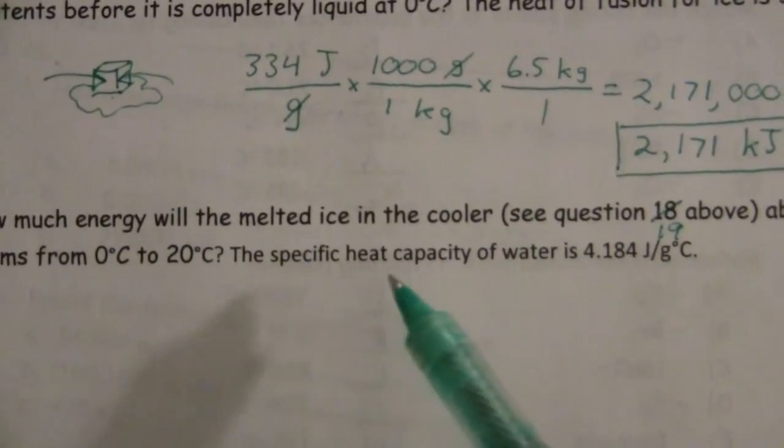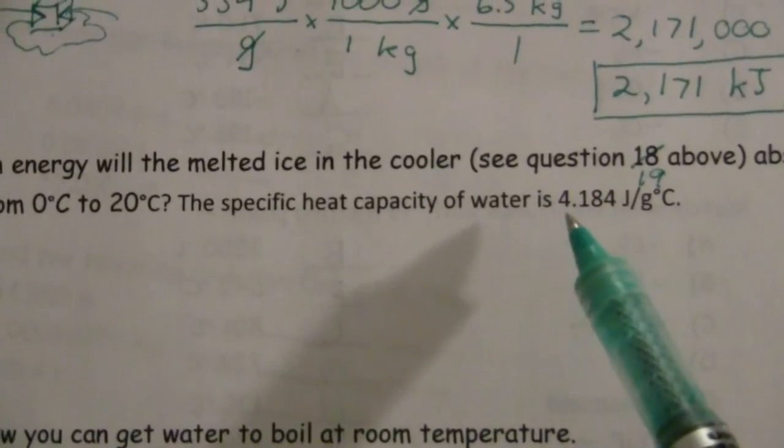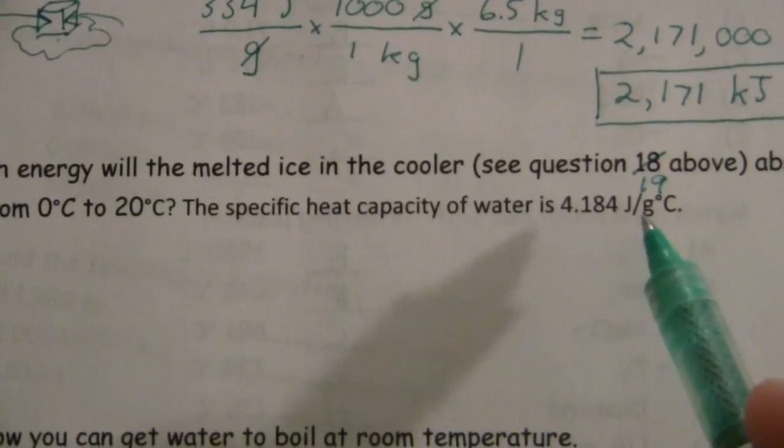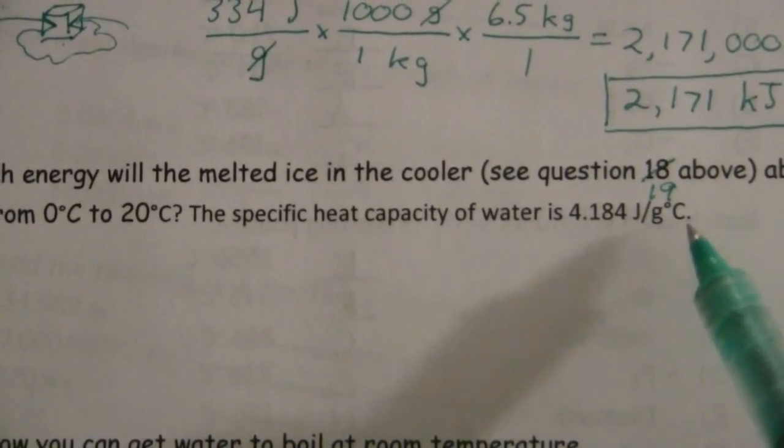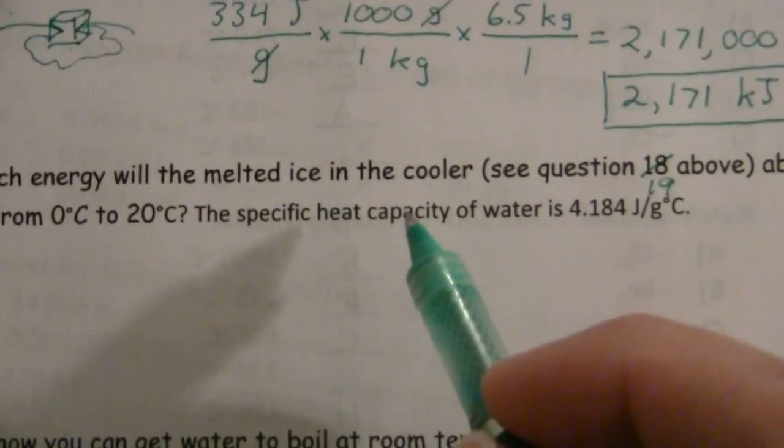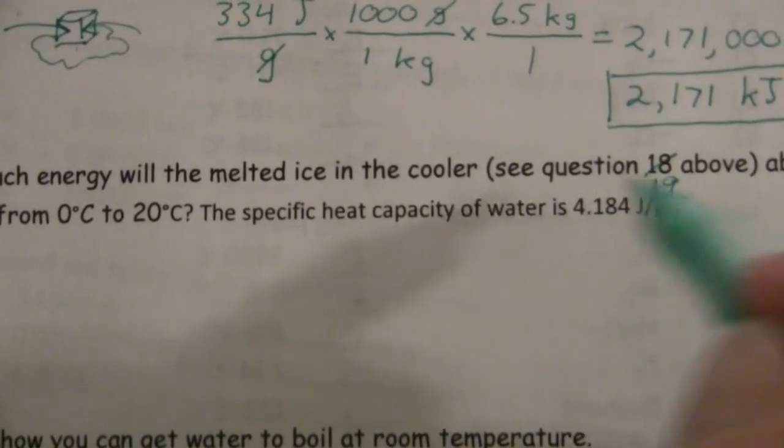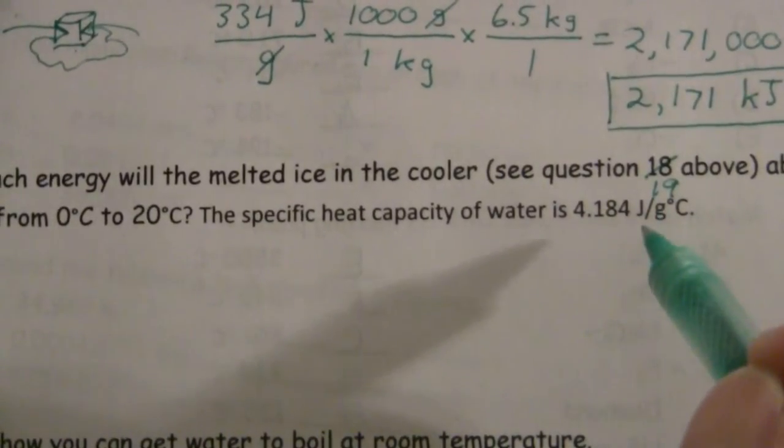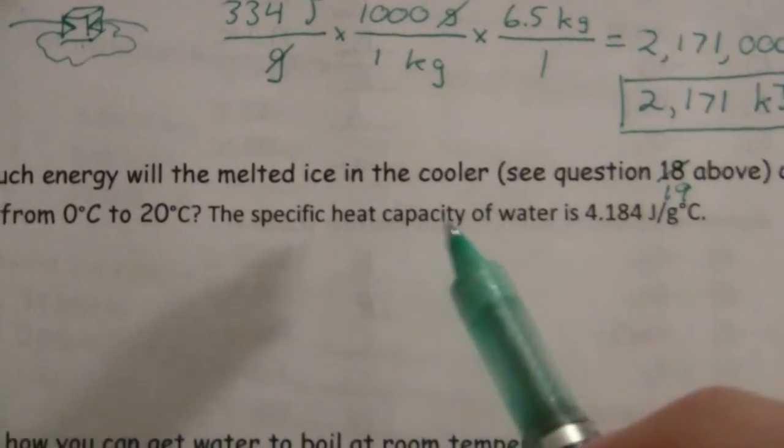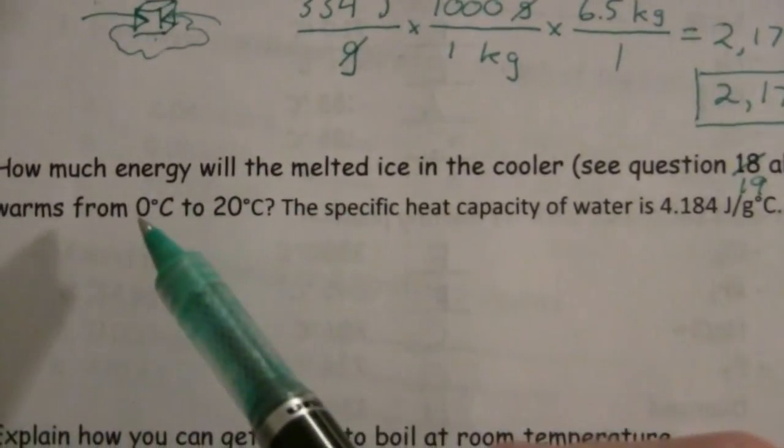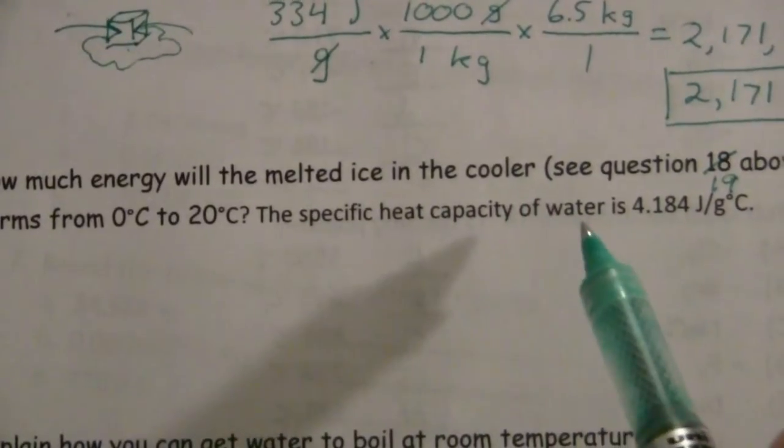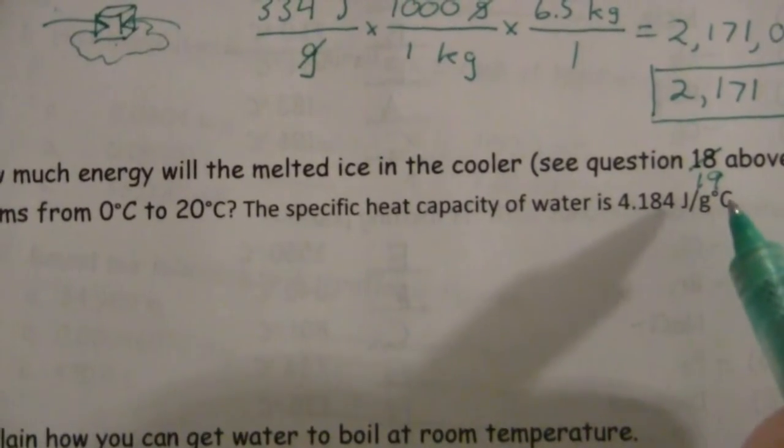And we're given the specific heat capacity of water, which is 4.184, and here's the important part, joules per gram degree Celsius. That means, and see, again, we don't really care what it's called. This is what's important. 4.184 joules. That's the amount of energy per gram.